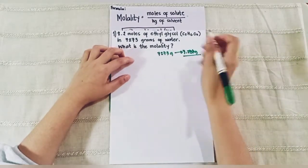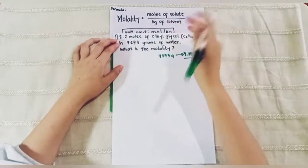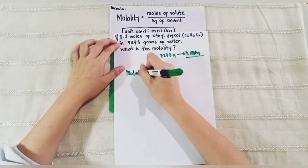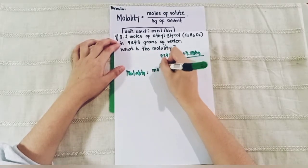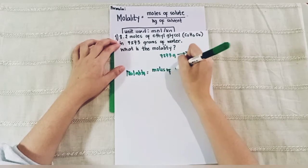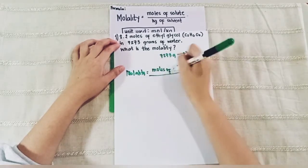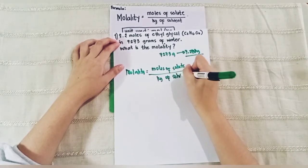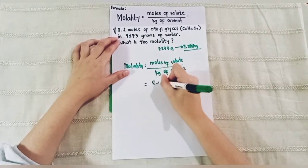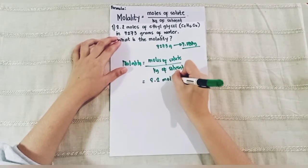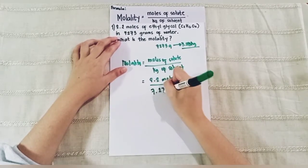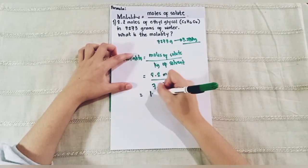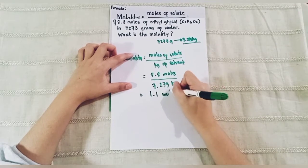Now that we have our kilograms and our moles of solute, let's solve for the molality. Molality equals moles of solute over kilogram of solvent. So we have 8.2 moles over 7.273 kilograms, and the final answer will be 1.1 molal.